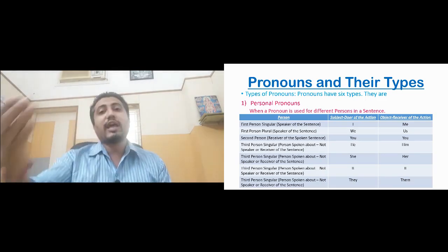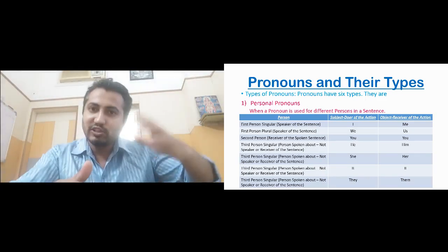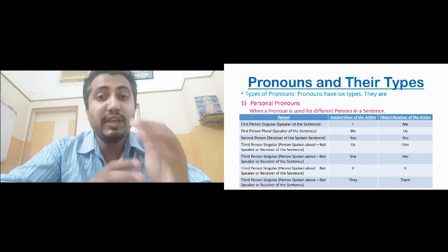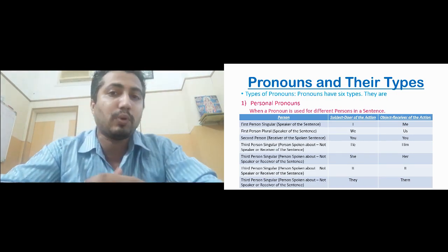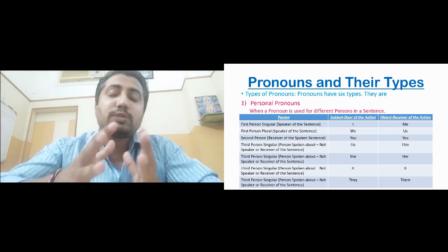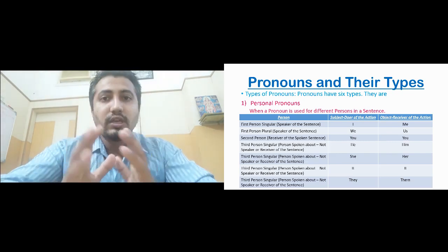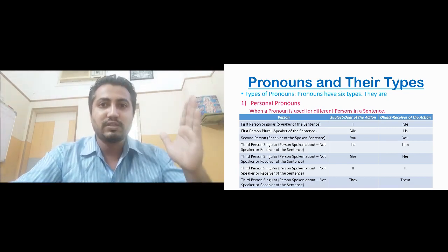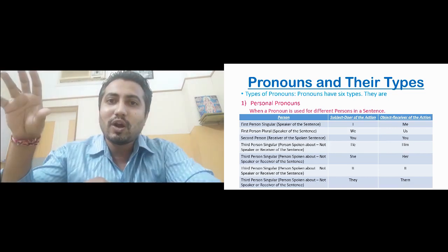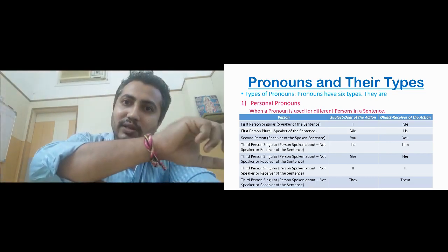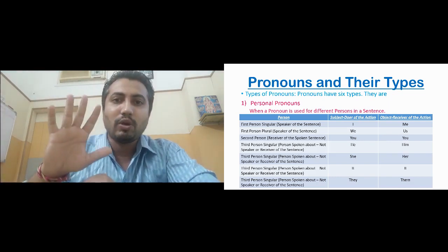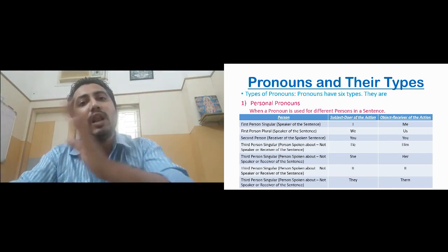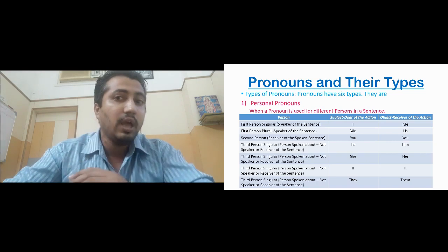Now let us look at the other types of pronoun. The first type is personal pronouns. We need to understand why they are called personal pronouns. We call these pronouns personal pronouns because these pronouns are dependent on persons — first person, second person, third person. According to the person, the pronoun will change. Because they are dependent on these persons, they are called personal pronouns.